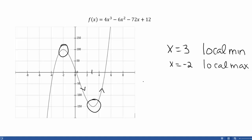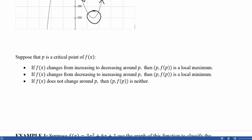These are the rules we're going to use to classify our critical points using the original function. We look at whether things are increasing or decreasing on the original function to classify. And if f(x) does not change — if the function is increasing the whole time or decreasing the whole time — then we don't have a local max or min; we needed to change from one to the other. Let's look at a couple of examples to classify critical points using the pictures of the original function.